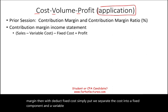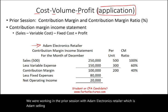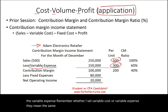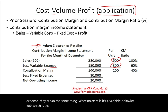We were working in the prior session with Adam Electronics, a retailer selling tablets. The selling price for each tablet is $500. The variable cost — whether I say variable cost or variable expense, they mean the same thing — is $300. So $500 minus $300 gives us a contribution margin of $200 per unit.